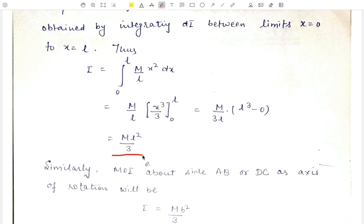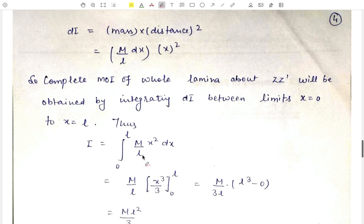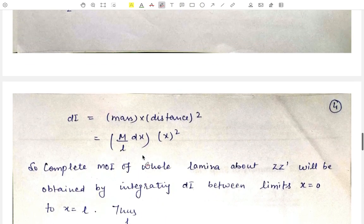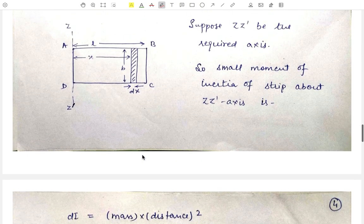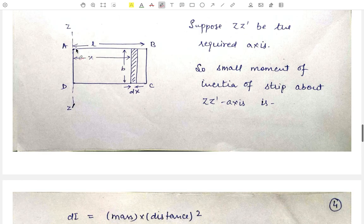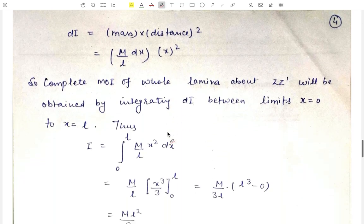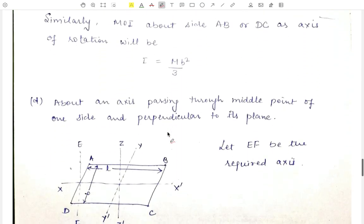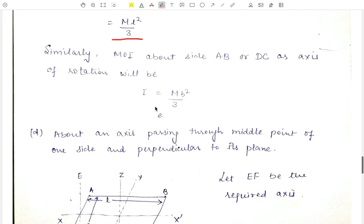In the same way, if we consider an axis passing through side AB or DC, then the moment of inertia will be equal to MB²/3.